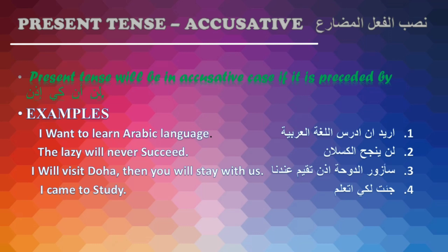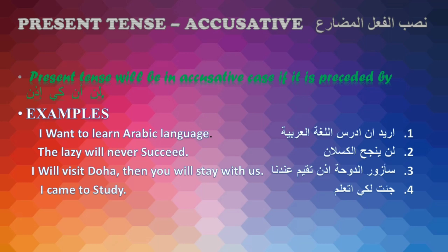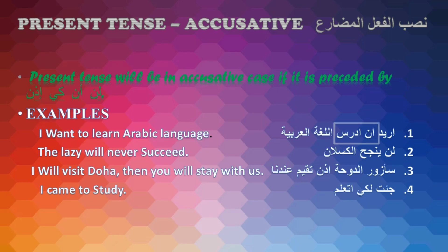Number one: Present tense accusative case, nasb fil-ul muzari. Present tense will be in accusative case if it is preceded by Lan, An, Kay, or Izan — these are Huruf ul-Nasb, the particles of accusative case. For example, Uridu an adrusa al-lughat al-arabiyya — I want to learn the Arabic language. Here 'an' is Huruf ul-Nasb and 'adrusa' is fil-ul muzari mansoob. Second word is 'lan': Lan yanjaha al-kaslan — The lazy will never succeed. 'Lan' is Huruf ul-Nasb and 'yanjaha' is fil-ul muzari mansoob.